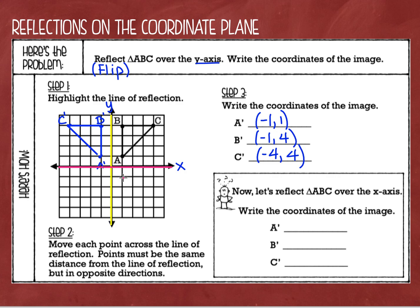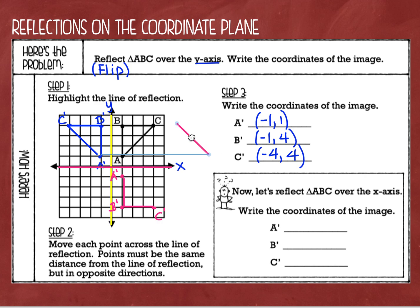Point A is one unit above the line of reflection, so my image of point A will be one below. Point B is four units above the line of reflection, so point B prime will be four units below. And then point C is four units above the line of reflection, so it will now be four units below. It's not like a translation where the shape is in exactly the same position — now it is a mirror image.